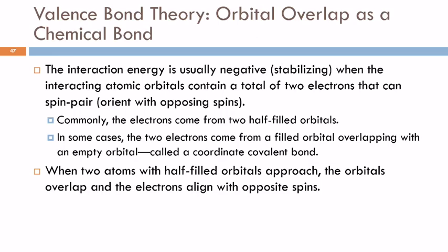That interaction energy is usually negative, meaning it stabilizes. When you have those two atomic orbitals, each having one electron, so the electron from one hydrogen and the electron from the other hydrogen, they're going to overlap, and you're going to get a pair of electrons.